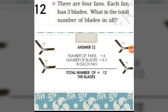12th sum: there are 4 fans. Each fan has 3 blades. What is the total number of blades in all? The number of fans is 4 and the number of blades in each fan is 3. So the total number of blades will be 4 multiplied by 3, which is equal to 12. Let us recheck: first fan 3 blades, second 3, third 3, fourth 3. So 4 times 3 is equal to 12.